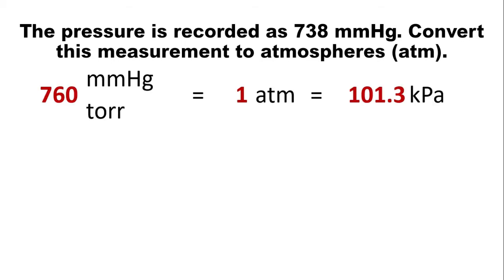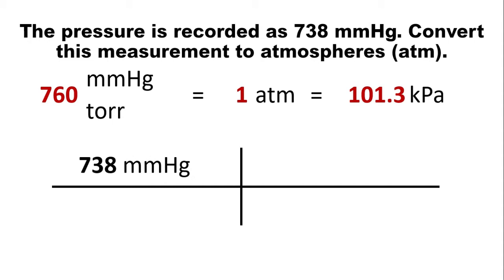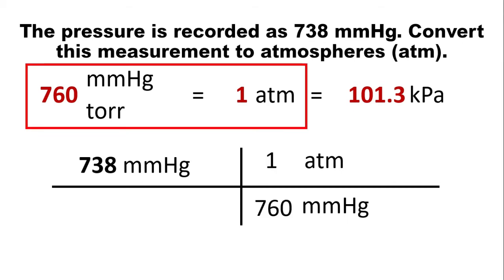So again, we have this relationship, right? So using the dimensional analysis, we put the given to the upper left and copy the conversion factor. Since we're looking for Atmosphere, it should be in the top and mmHg should be in the bottom, right? And then we copy the coefficients, 1 over 760. So the units will cancel, which give us 0.971 atmospheres. Three significant figures. So we have the correct answer.